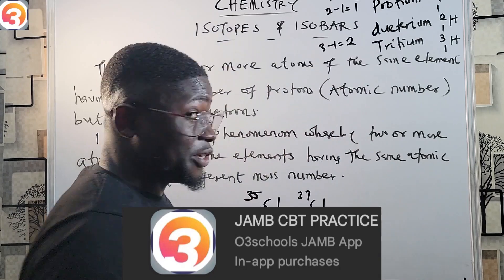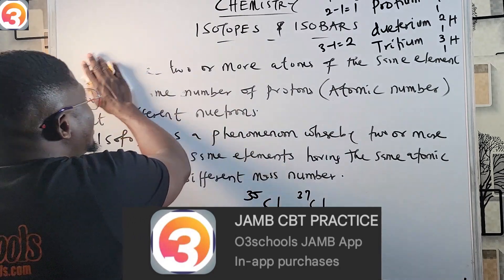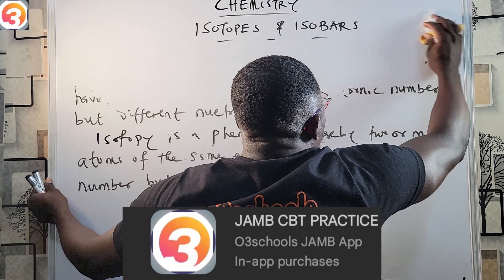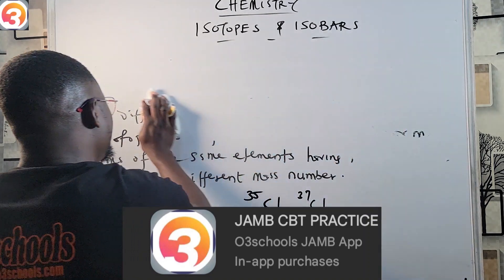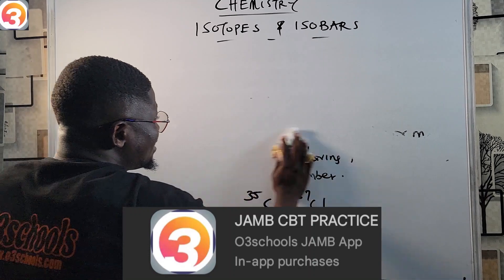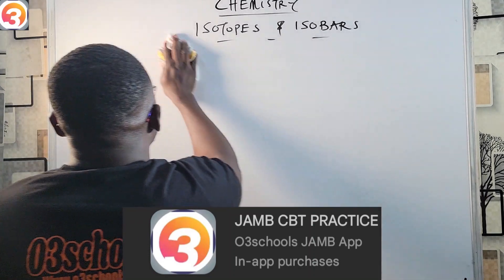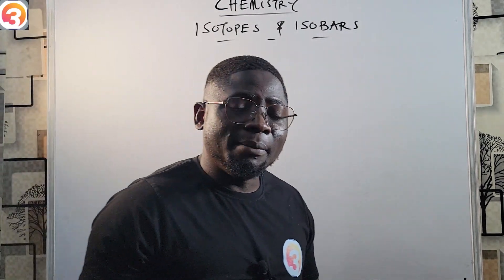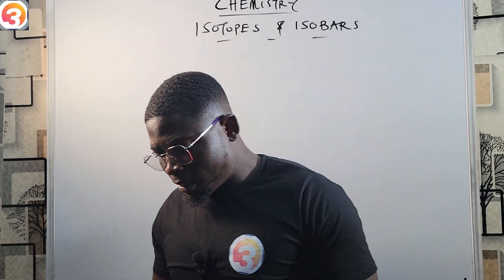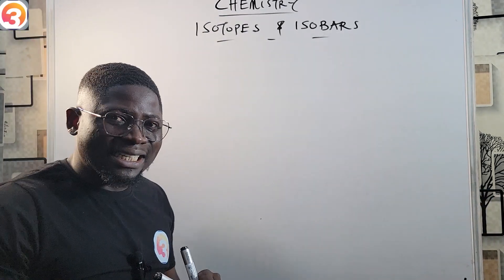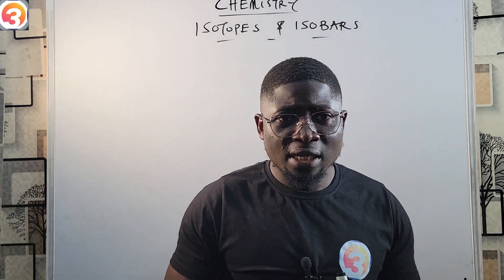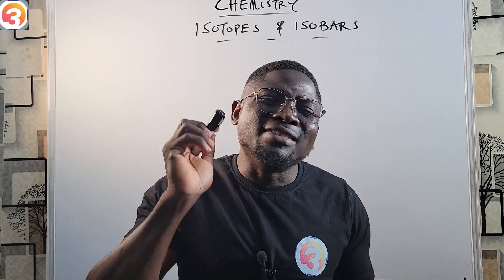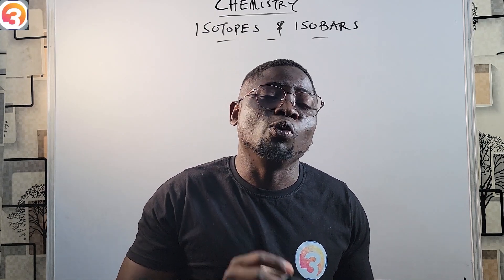Now I'm going to jump into isobars. Do not worry about calculations on isotopes — we have a special class series treating calculations in chemistry. Isobars are two or more elements having a difference in their number of protons and neutrons — the number of protons are different, the number of neutrons are different — but they have the same mass number.